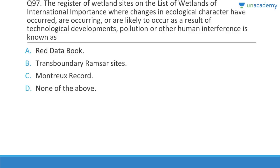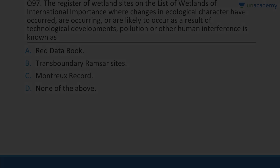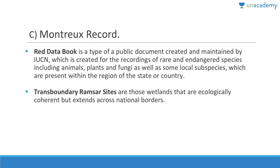Question 97: The register of wetland sites on the list of wetlands of international importance where changes in ecological character have occurred, are occurring, or are likely to occur as a result of technological developments, pollution, or other human interference is known as the Montreux Record. The Red Data Book is a public document created and maintained by the IUCN for threatened and endangered species. Transboundary Ramsar sites are wetlands that are ecologically coherent but extend across national boundaries.